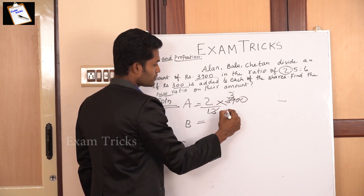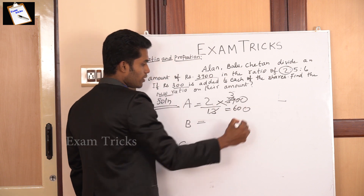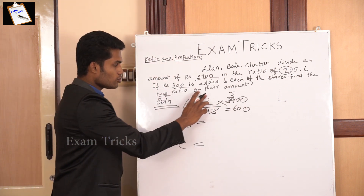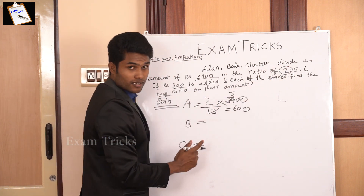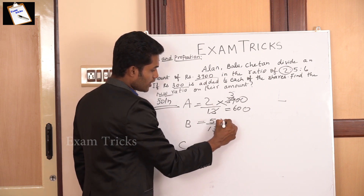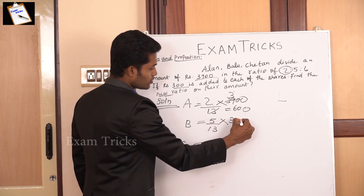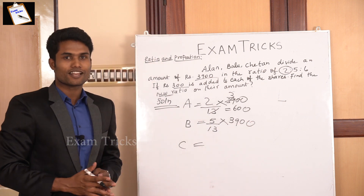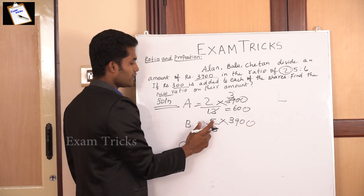13 goes 3 times. I hope you understand. So 2 by 13. As you can see, A can be 2 by 13 into 3,900. You can see the logic of the equation.